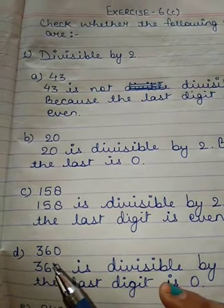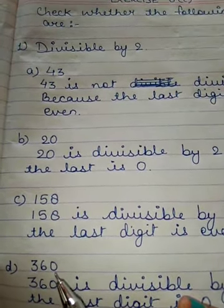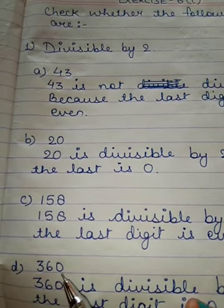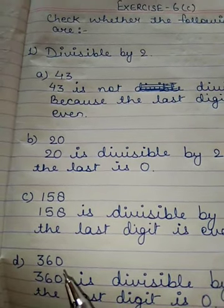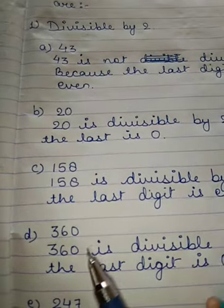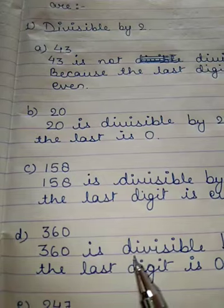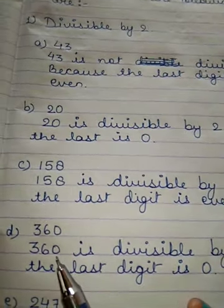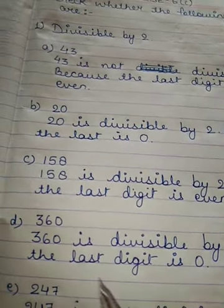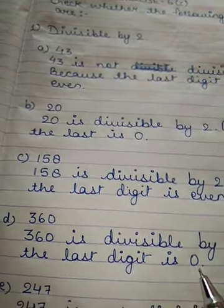Question number D: 360. You can see the last digit is 0. According to the rule, when 0 is the last digit, the number is divisible by 2. So, 360 is divisible by 2 because the last digit is 0.